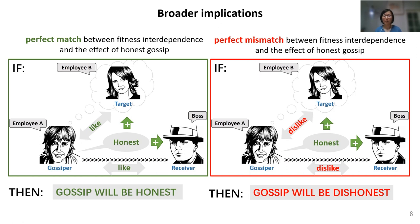But what happens if there is an imperfect match between interdependence and the effect of honest gossip? Well, that is a longer story — you will have to read our paper for that. Of course, real-life situations are often more complex, but these model results can give us some implications about when people can be honest or dishonest, and when others can be trusted.